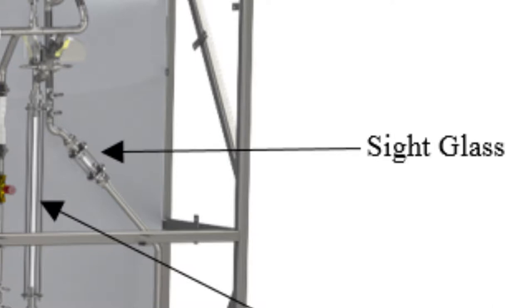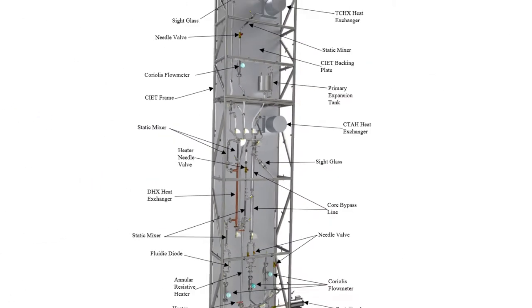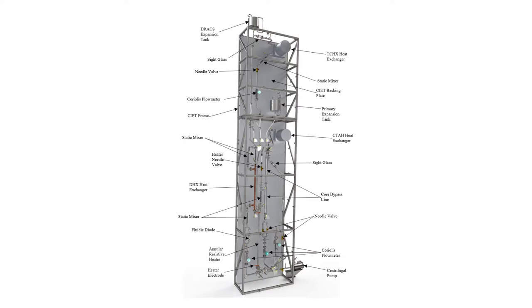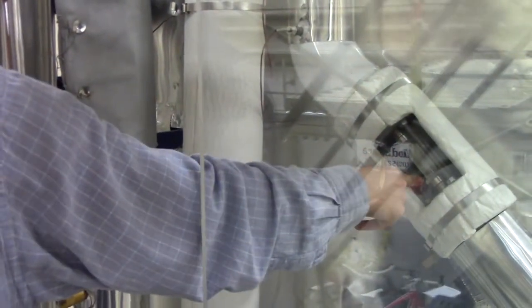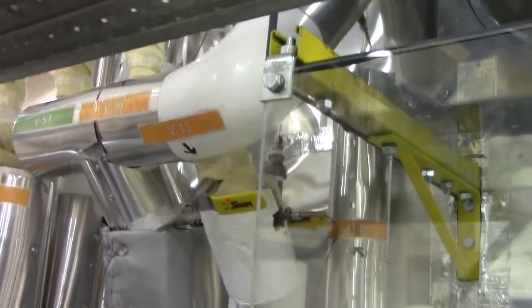You also learn a lot — for example, if you get bubbles trapped in the system, which when you fill things you generally do, they can change the behavior. In this loop we've got lots of transparent locations where we can see bubbles and vent them from the high points so we can get all trapped gases out once we've filled it. It's really important when you design the salt system to make sure it's not going to have high points that trap gas in unexpected ways.